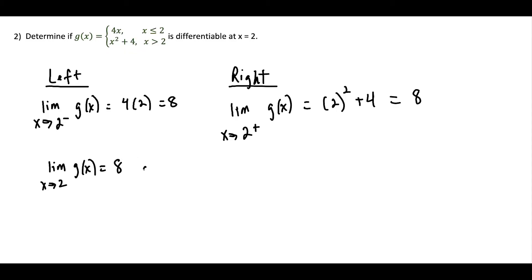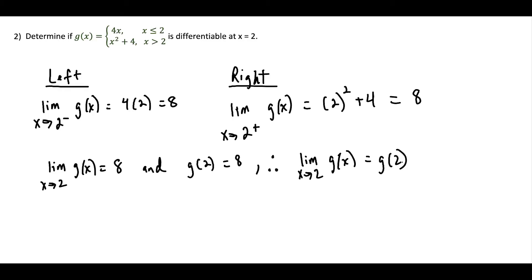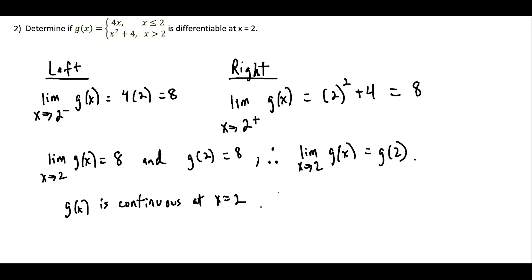Since both one-sided limits equal eight, the limit as x approaches two of g(x) equals eight. We can also say g(2) equals eight by substituting into the four-times-x component. This tells us the limit as x approaches two of g(x) equals g(2), so we've established that g is continuous. Now let's see if it's actually differentiable.